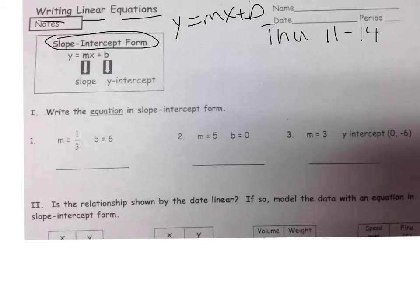Last class period, we took regular equations and we wrote them into this form. Today, we're going to take different pieces of information and create equations like this. We start out here pretty simple. If they give us the m and the b, all we do is plug them in and create our equation.